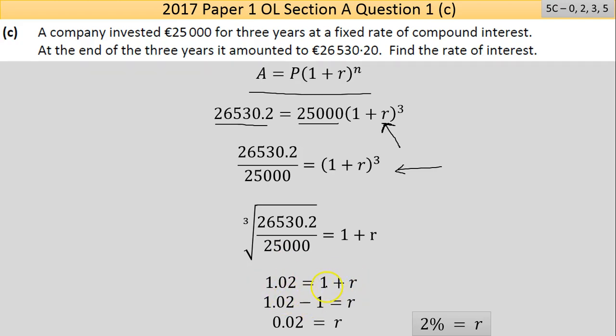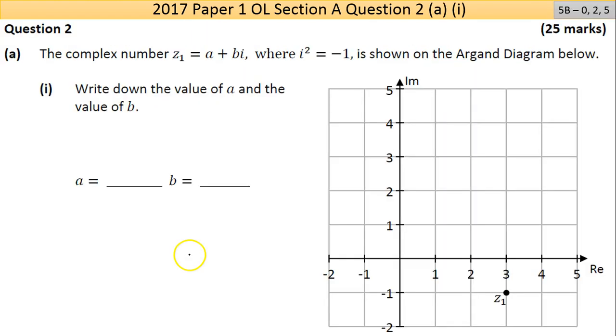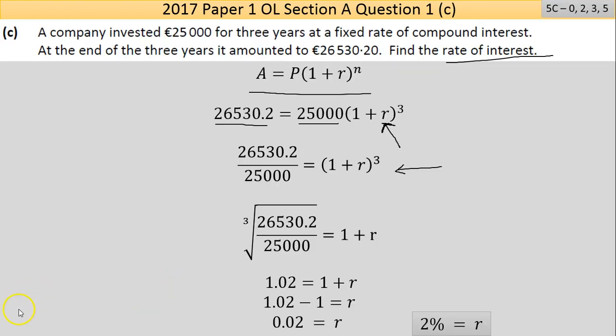Bring the 1 across - it becomes subtracted. It was adding on the right, does the opposite on the left, and you end up with 0.02. Now 0.02 represents the same thing as 2%, so 0.02 multiplied by 100 will give you the percentage, and that's the rate of interest. Job done. This question is finished - question one finished. See you in question two. Thank you.